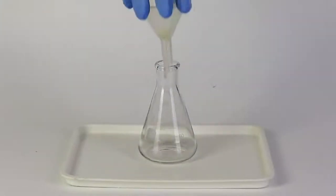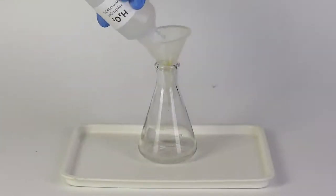Take the flask and put the funnel into it. Pour 40 milliliters of the 3% hydrogen peroxide solution into the flask.